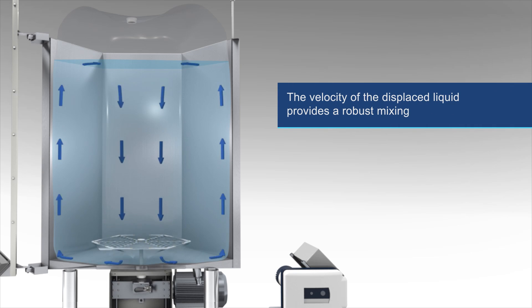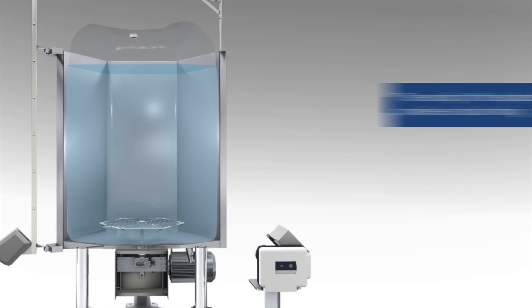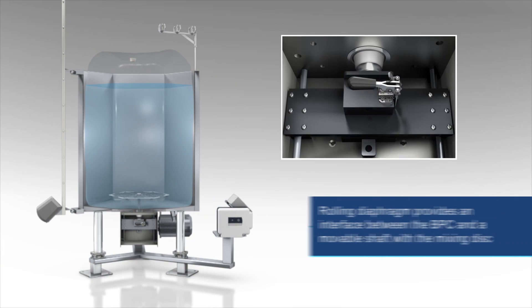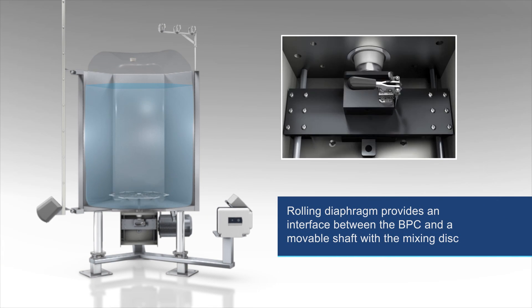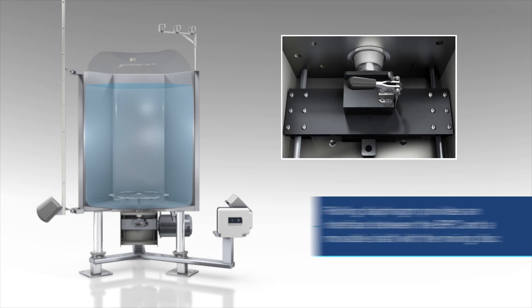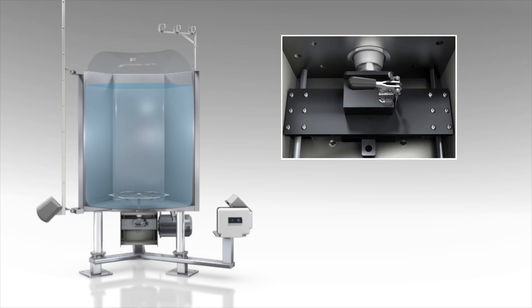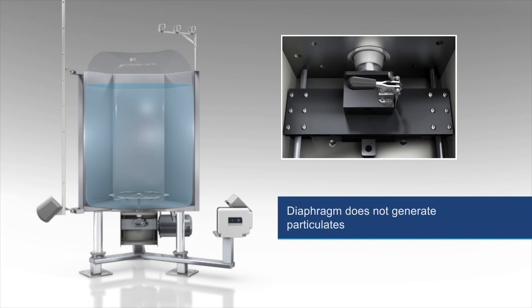The velocity of the displaced liquid provides robust mixing. A rolling diaphragm provides an interface between the stationary part of the BPC and a movable shaft with the mixing disk. There are no contact surfaces between the sidewalls of the rolling diaphragm when in motion.